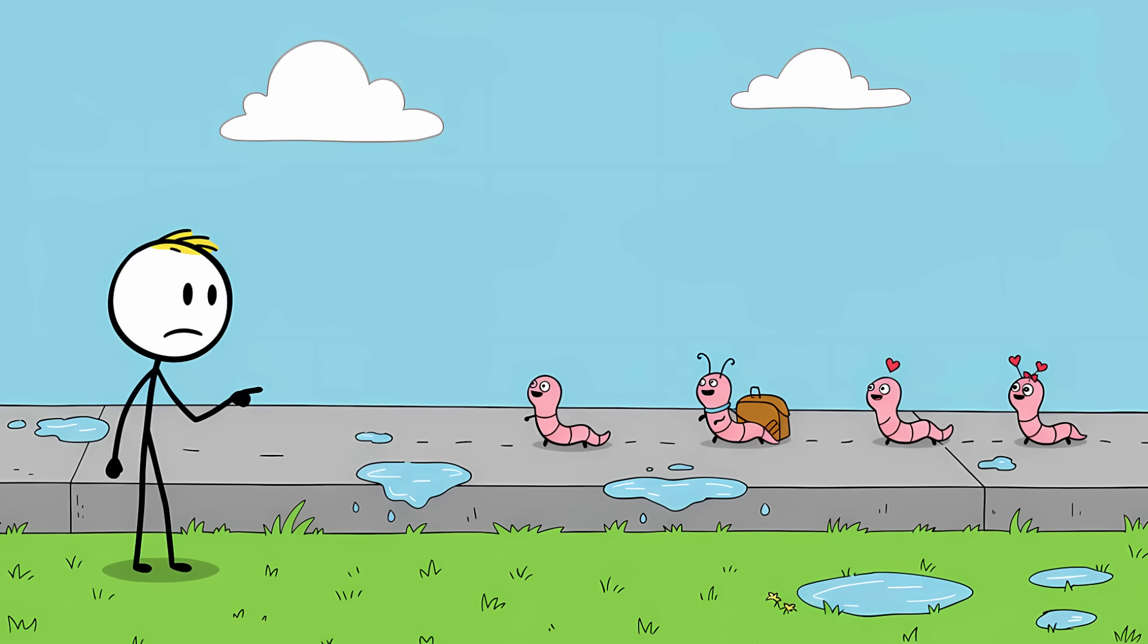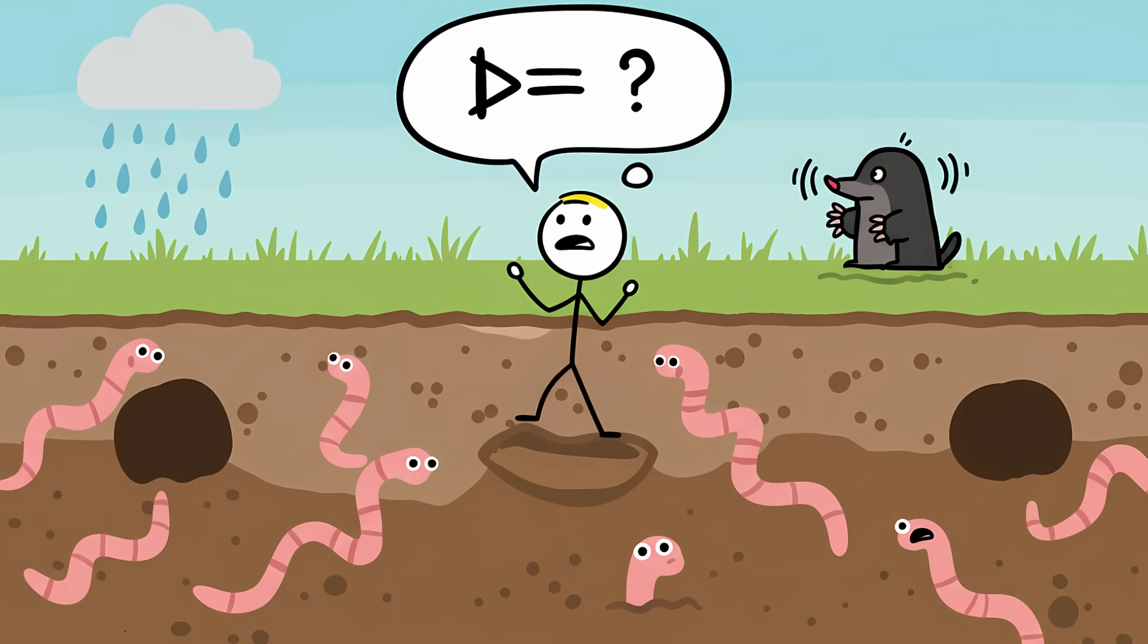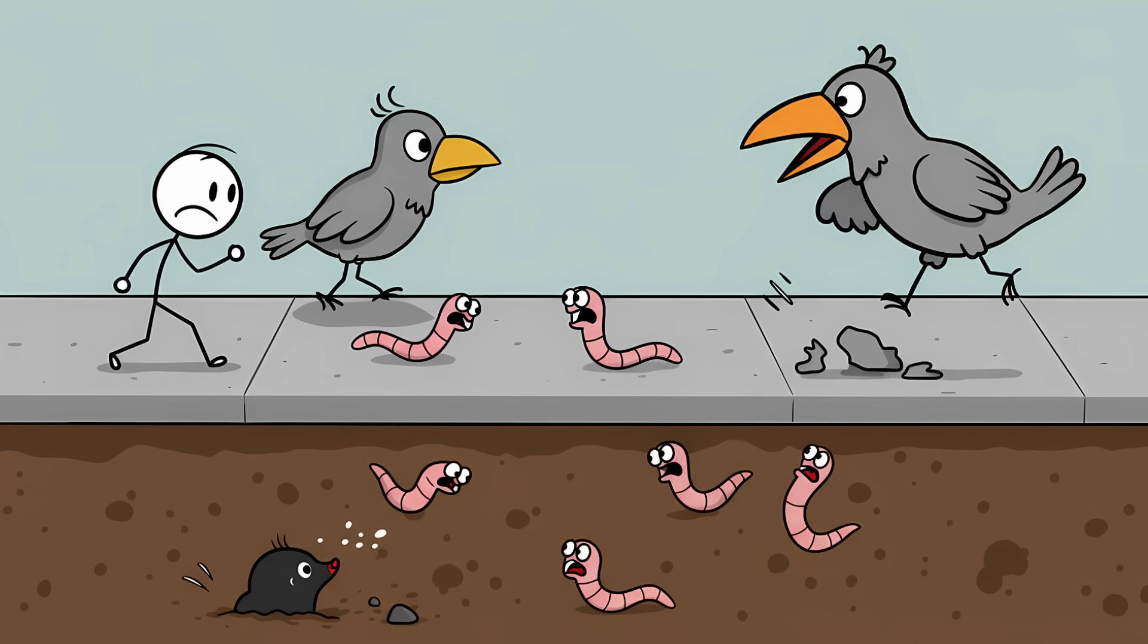One is migration. Wet ground and high humidity provide the perfect conditions for worms to travel long distances over the surface without drying out. The sidewalk is like a superhighway for them, a chance to move to new territory and find a mate without turning into a crispy worm chip. Another theory is that the vibrations from the falling rain sound similar to the vibrations made by predators like moles. The worms might be coming to the surface as a predator avoidance tactic, ironically putting them in a much more dangerous place.